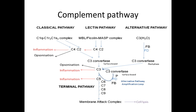The lectin pathway activates when there is no endotoxin or antibody present, but another molecule on the surface of bacteria called mannose or mannan. C3B binds to mannose-binding lectin found in circulation, with help from mannose-binding lectin-associated serine proteases, which work similarly to C1 in the classical pathway.